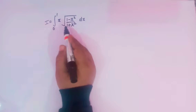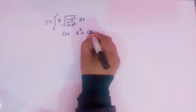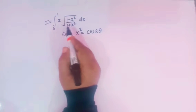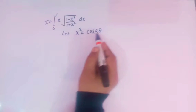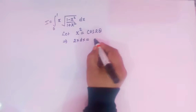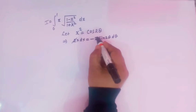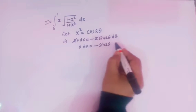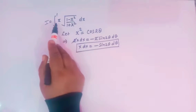We can simplify this integral by making the substitution x square equal to cos 2θ, because we know an important trigonometric identity which we will discuss later on. So let us take x square equal to cos 2θ. If we differentiate both sides, we get 2x dx equal to minus 2 sin 2θ dθ. The 2s cancel, so we are left with x dx equal to minus sin 2θ dθ.